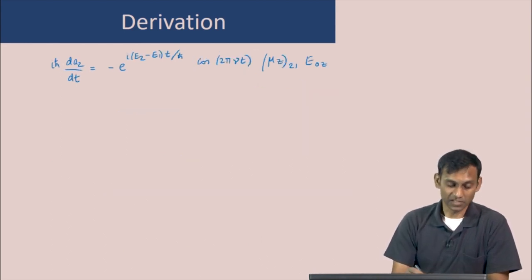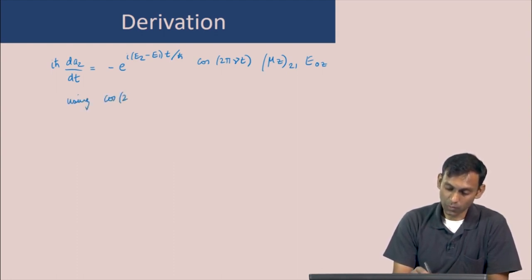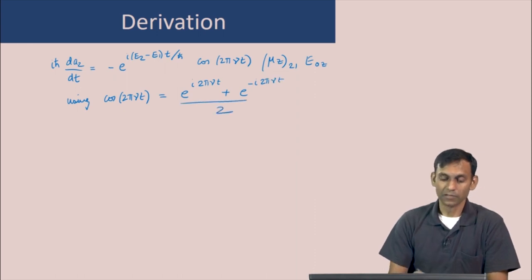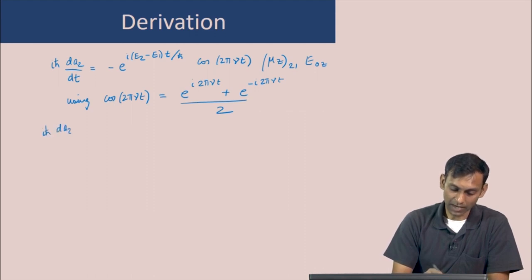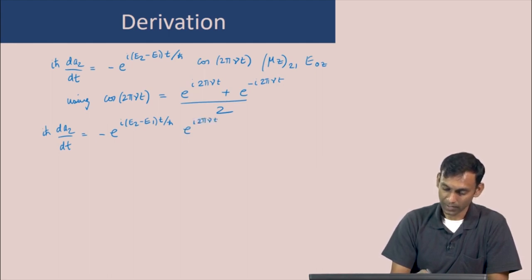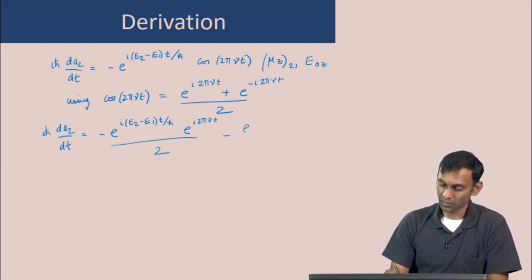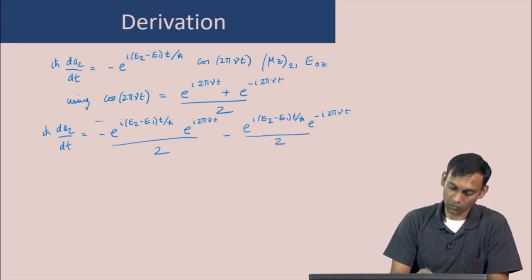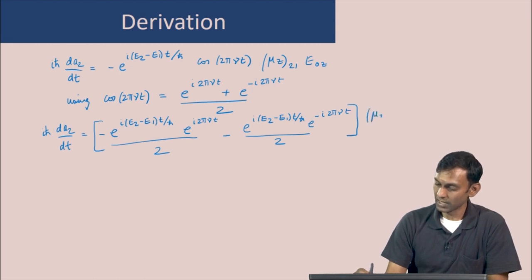Using cos(2π·nu·t) equals [exp(i·2π·nu·t) + exp(−i·2π·nu·t)] / 2, we substitute and expand. Combining the exponentials, i-h-bar · dA2/dt equals minus (1/2) · mu_z(2,1) · E0z times [exp(i(E2−E1+hν)t/h-bar) + exp(i(E2−E1−hν)t/h-bar)].